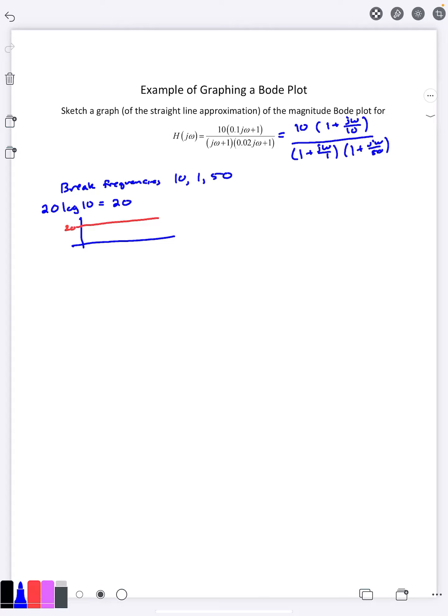Then for the term where I have the 20 log of the absolute value 1 plus j omega over 10, we saw in the previous video where when you have 1 plus term it starts out at 0 until it reaches the break frequency of 10 here, at which point it starts going up at a slope of 20 decibels per decade.